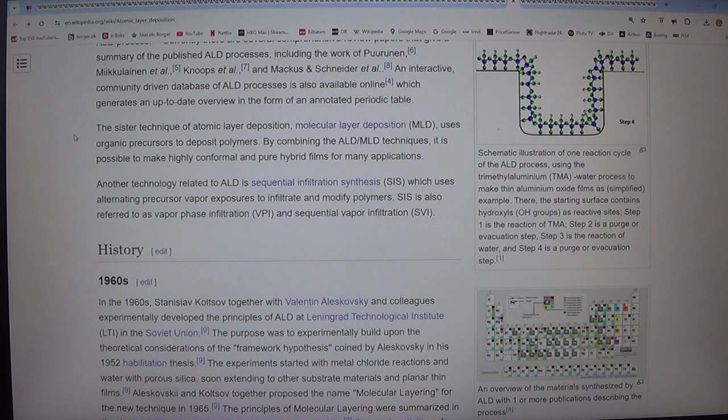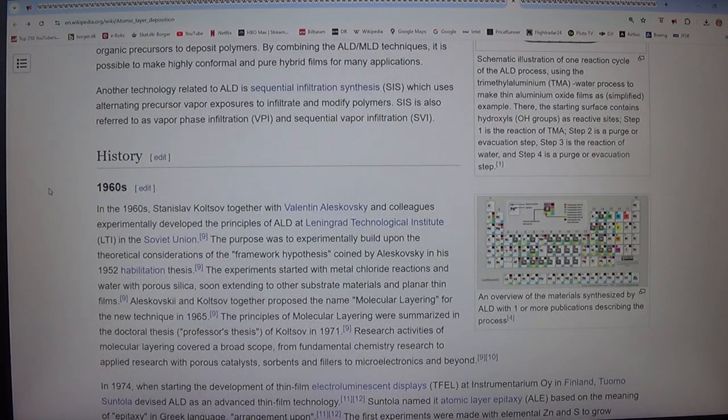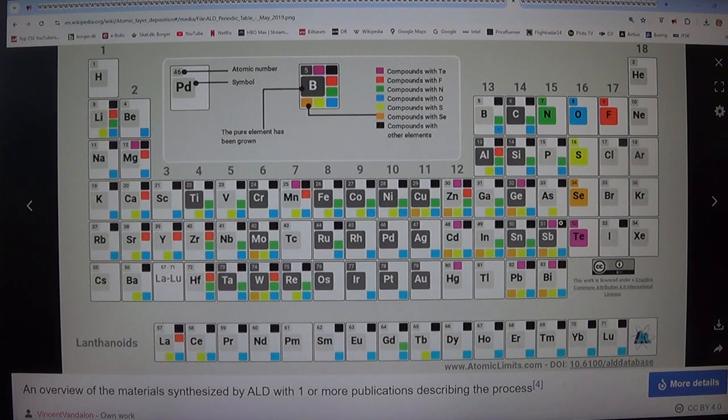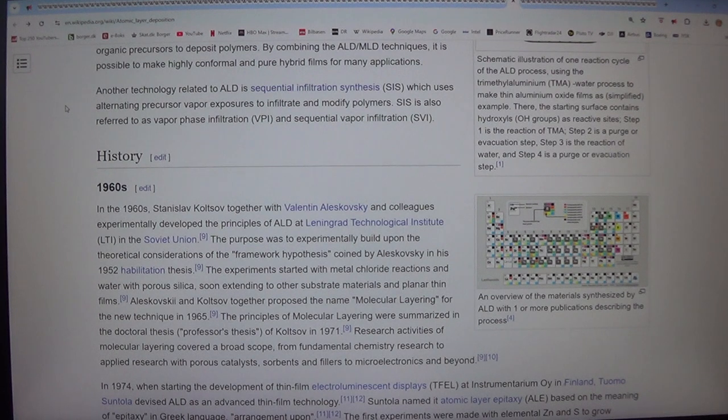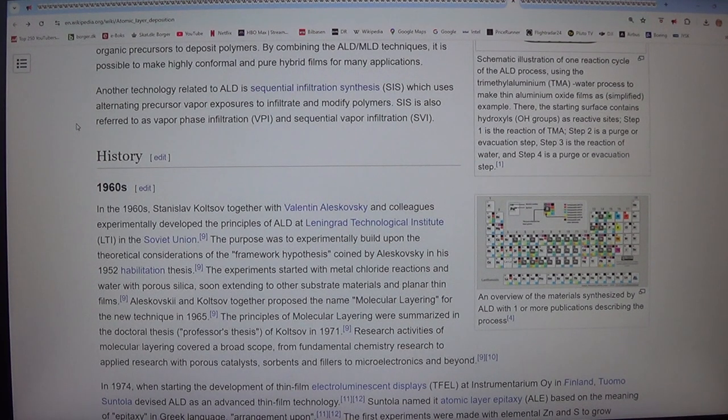By combining the ALD/MLD techniques, it is possible to make highly conformal and pure hybrid films for many applications. Another technology related to ALD is sequential infiltration synthesis (SIS), which uses alternating precursor vapor exposures to infiltrate and modify polymers. SIS is also referred to as vapor phase infiltration (VPI) and sequential vapor infiltration (SVI).